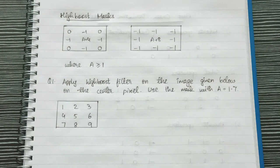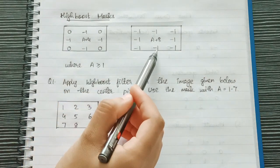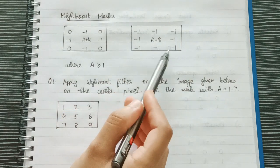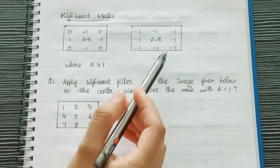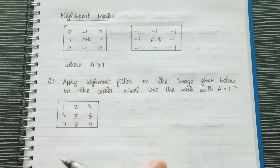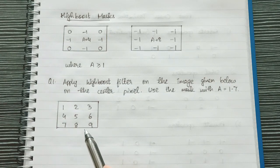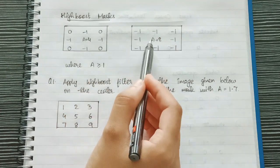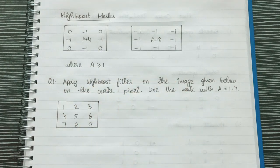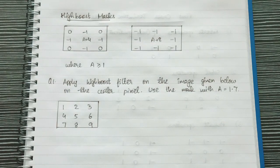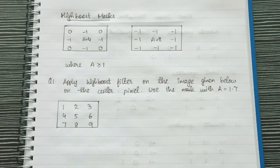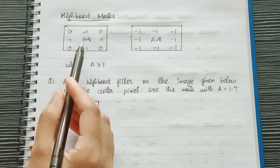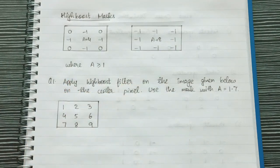So using the above formulas as you can see here we have got the high boost filtering mask. So here you can see these masks, they are similar to our laplacian mask. If A is equal to 1 then that would be our case of enhanced laplacian filter. Remember we had the value of 5 here for enhanced laplacian and the value of 9 here. So if A value is greater than 1 then that would be our high boost mask.